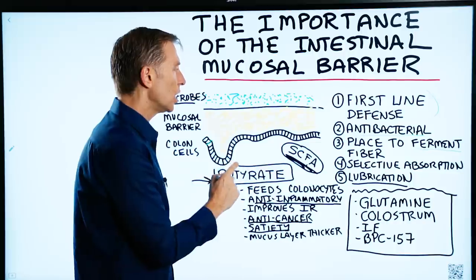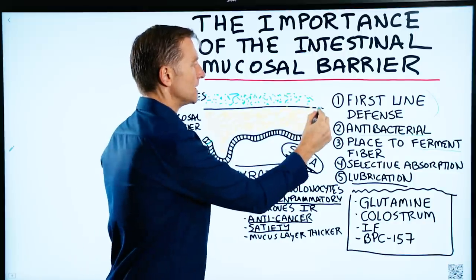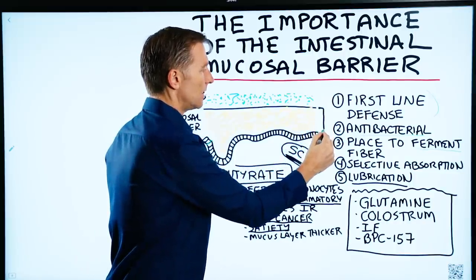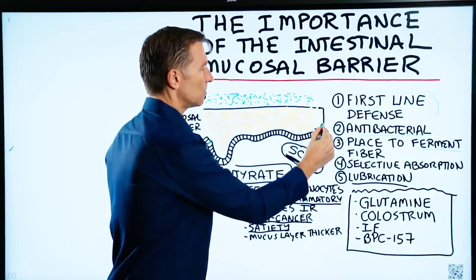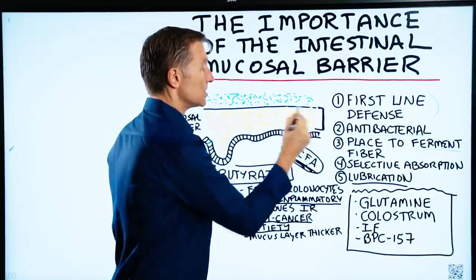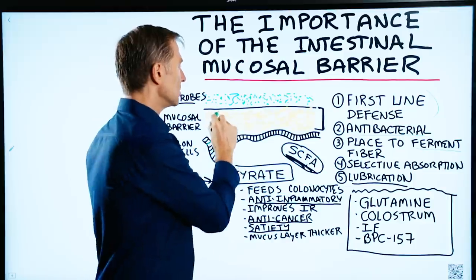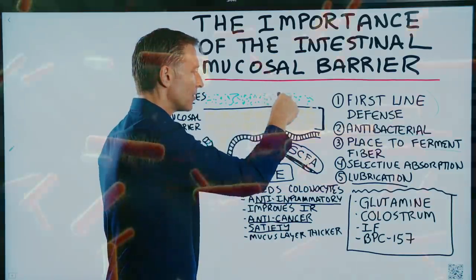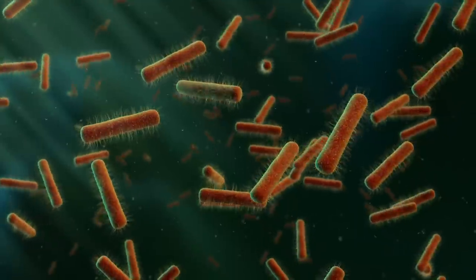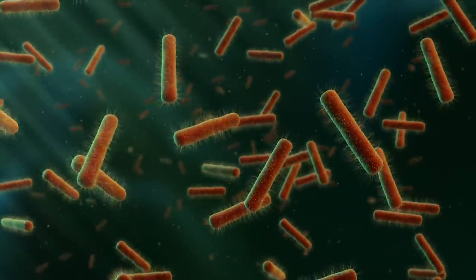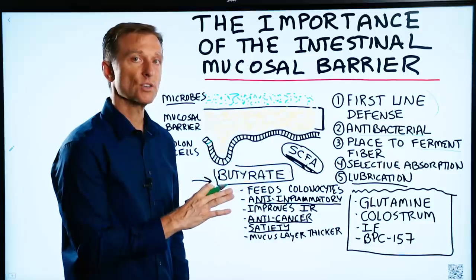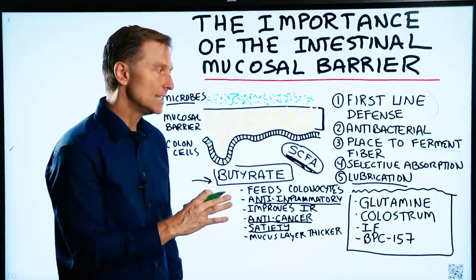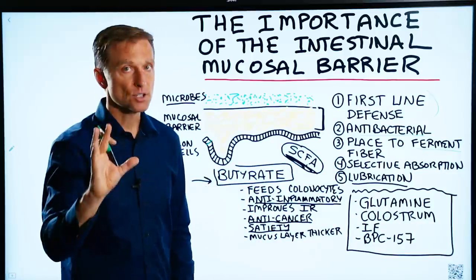Lastly, butyrate will help maintain the thickness of this mucosal barrier, which is very important because if you lose this barrier, then these microbes can get in there and create a lot of problems. This is just another reason why you should be consuming fiber, as in vegetables.